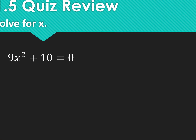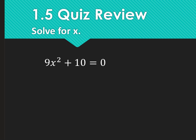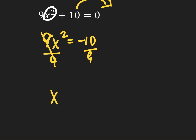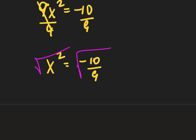All right, these last two — we're solving. Anytime we're solving a quadratic, the first thing we'd love to do is factor. If we can't, we can use the even root property, the quadratic formula, or complete the square. What I notice here is that I have an x squared and a constant, but no b term. So I'm going to isolate that x squared — move 10 to the other side: 9x squared equals negative 10. Divide both sides by 9: x squared equals negative 10 over 9.